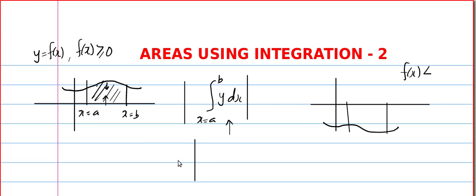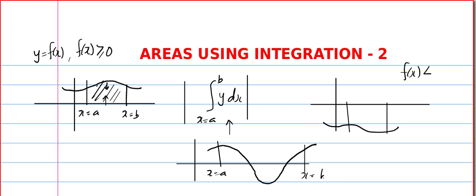Now, the third and most important case: a little bit of the curve is above the axis and a little bit is below the axis. In such cases, if you want the area between x = a and x = b, you use the formula integral y dx whenever the curve stays above the x-axis, and the formula with modulus whenever it stays below. Finally, you add all these parts to get the total area.